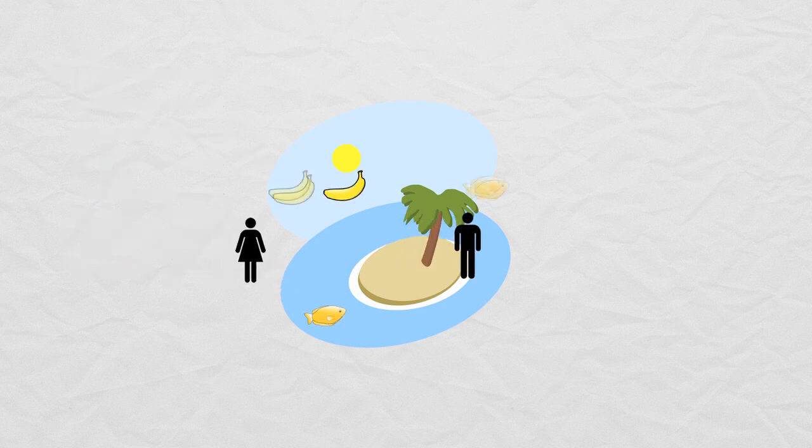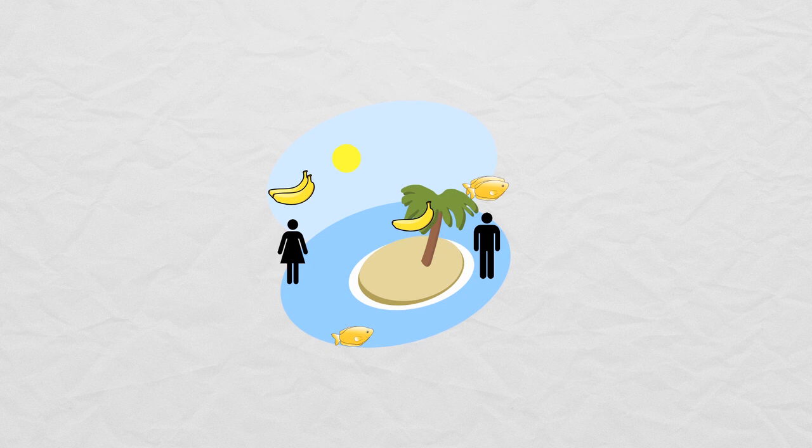Yes they can. What matters is not whether either of them has an absolute advantage in fishing or banana picking, but whether they have a relative advantage. Jane would still have to sacrifice two bananas to catch one fish herself, and Gilberto Rahul would still have to sacrifice two fish to pick one banana himself. So trading one banana for one fish is still beneficial to both.